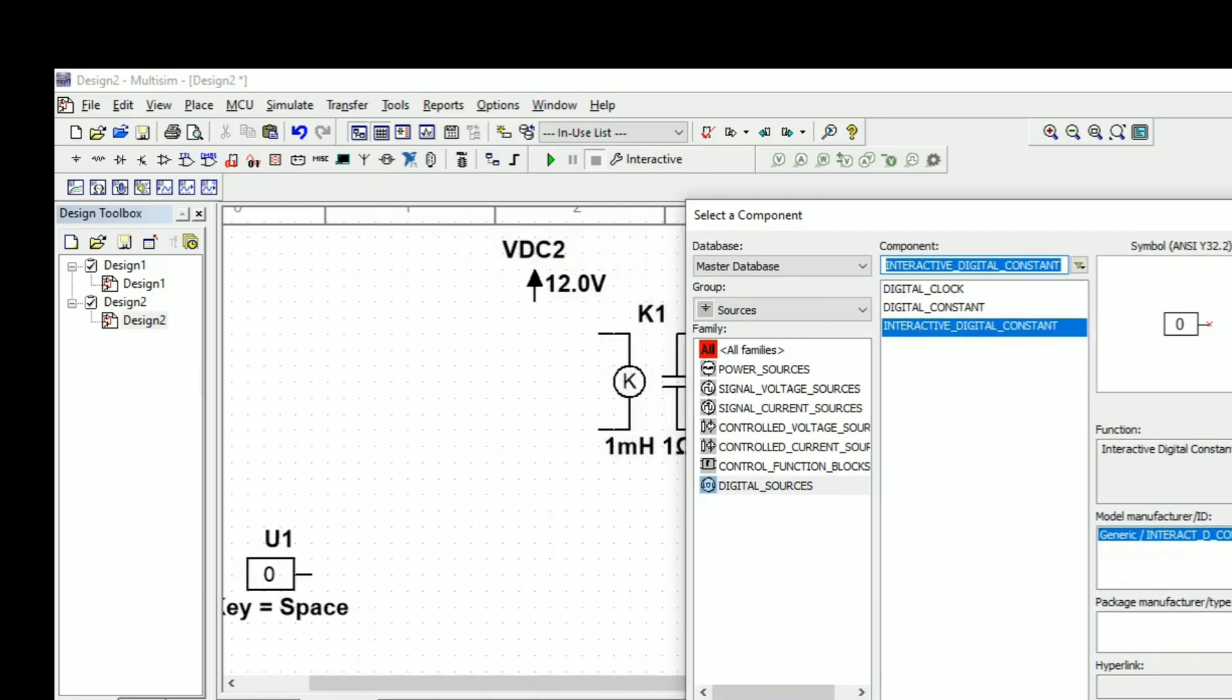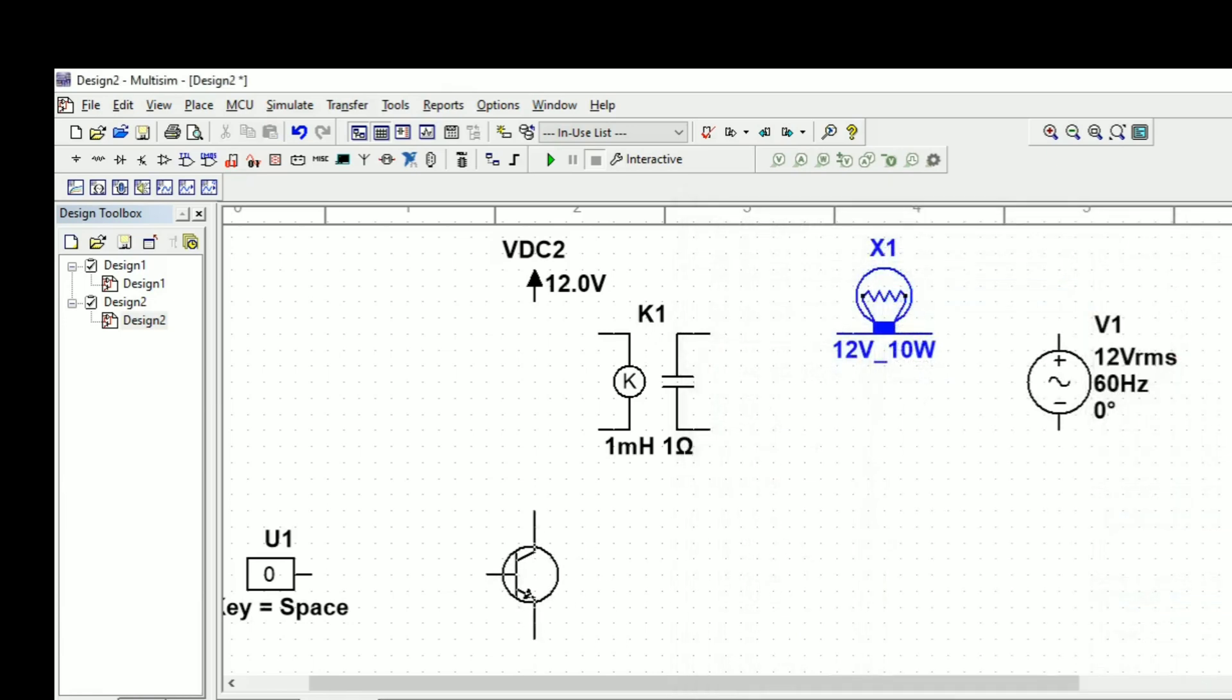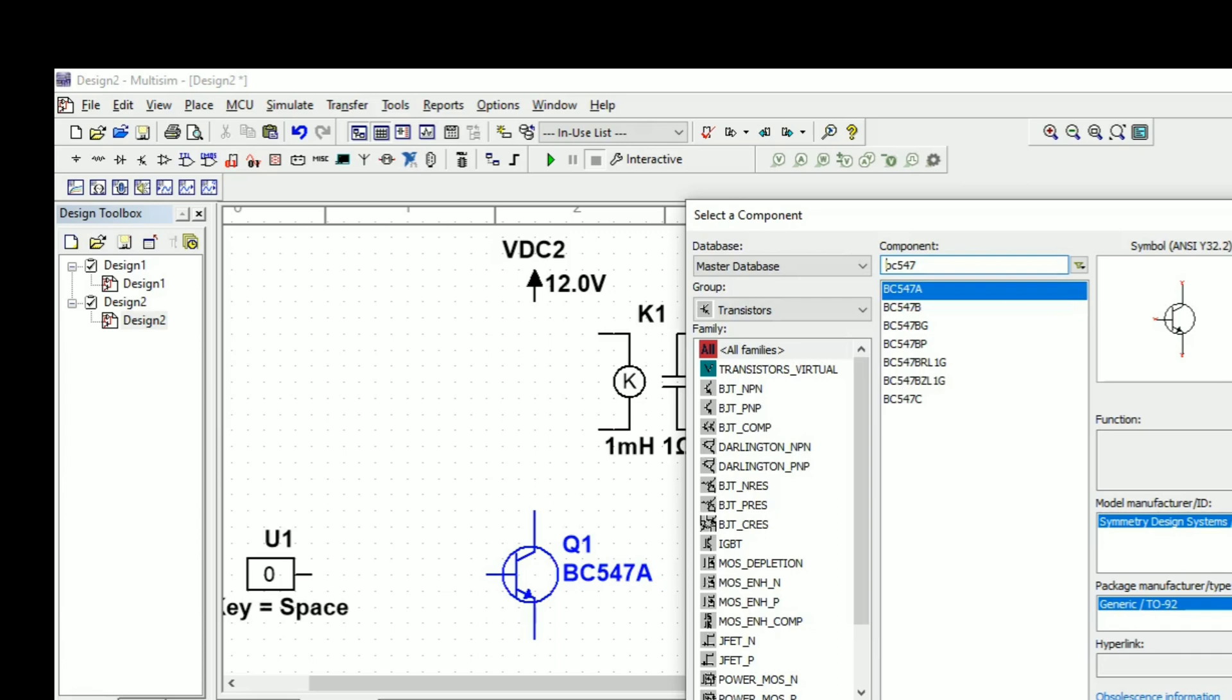So we will take from the digital source, the interactive digital constant. It is 0 or 1. This 0 or 1 is given into the relay using some switch. The switch may be a transistor switch, so we will take the BC547 transistor.